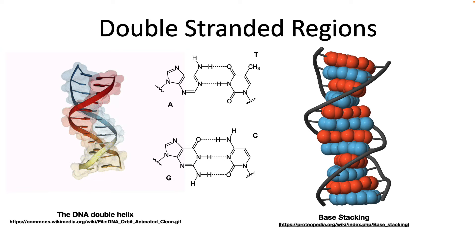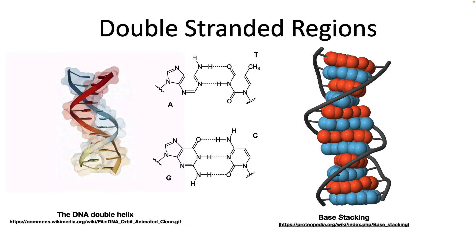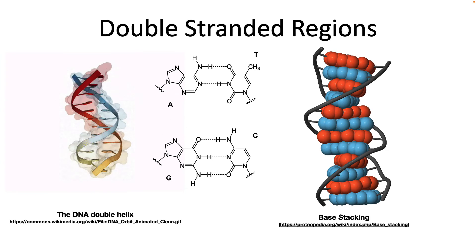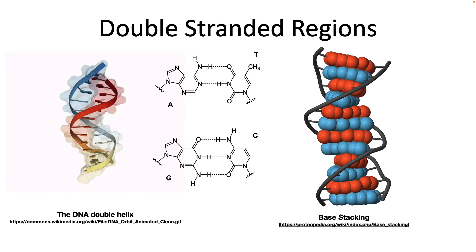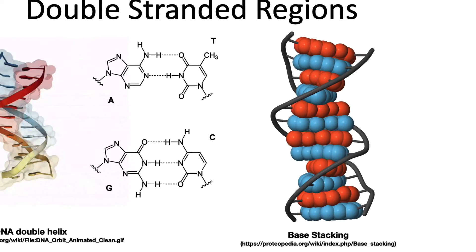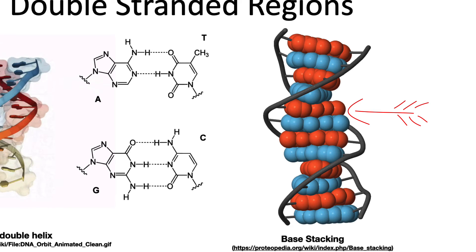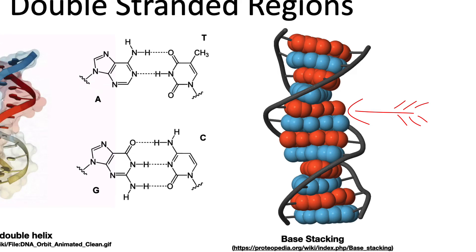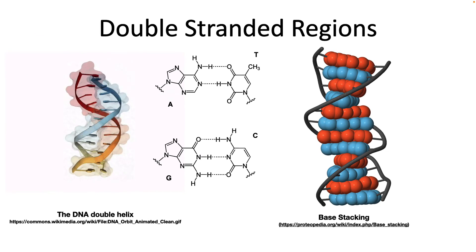Let's think a little bit about the double-stranded regions of DNA. A pairs with T and G pairs with C when forming the double strand. A DNA double helix is a very stable structure — but what makes it stable? The hydrogen bonds between AT and GC give the DNA helix its specificity, but they are not the primary force stabilizing the DNA. Look at the base stacking structure on the right. The close association of base pairs that stack upon one another creates favorable van der Waals forces, and these contribute significantly to stability. Base stacking is the major force that holds DNA together.